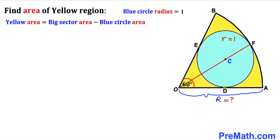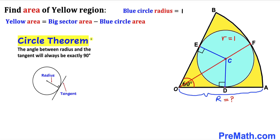Now let's connect points D and E with center C. Recalling the circle theorem again: the angle between the radius and the tangent is always 90 degrees. So the angles at D and E are each 90 degrees, since these are radii meeting tangent lines.